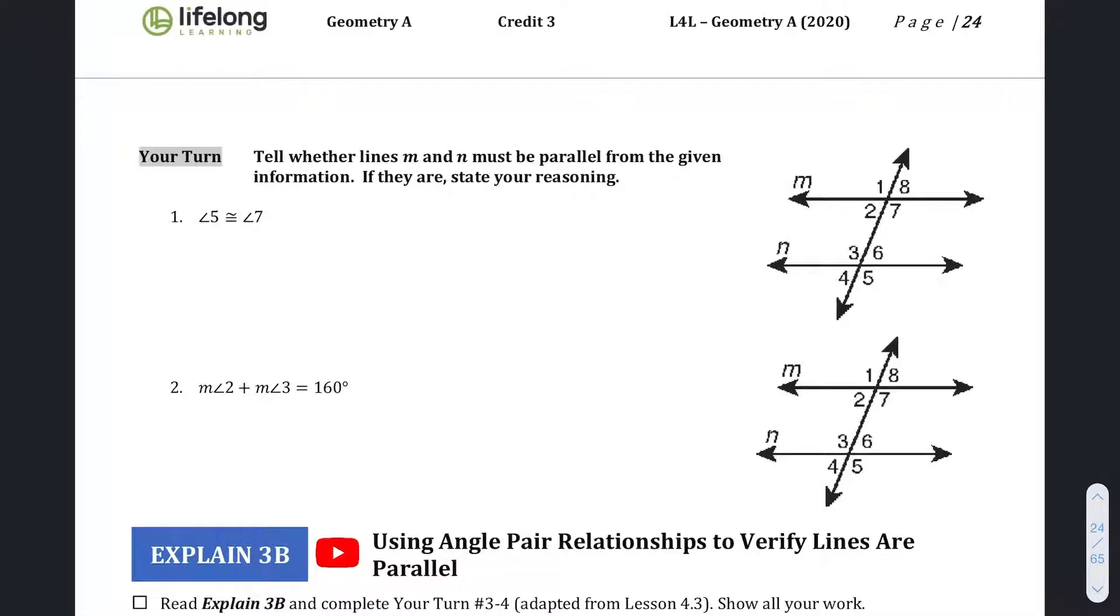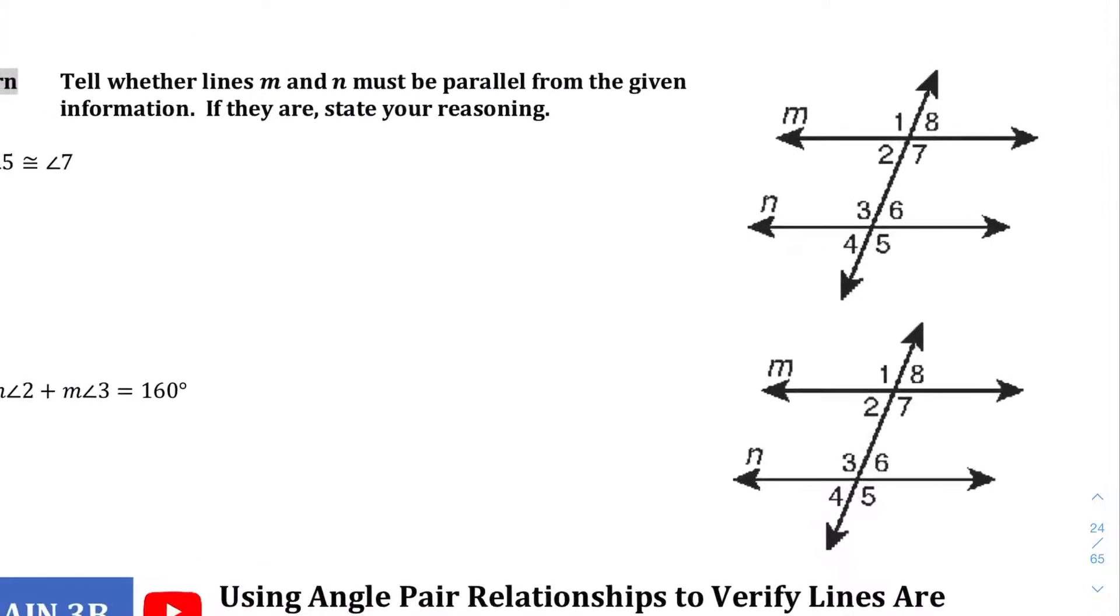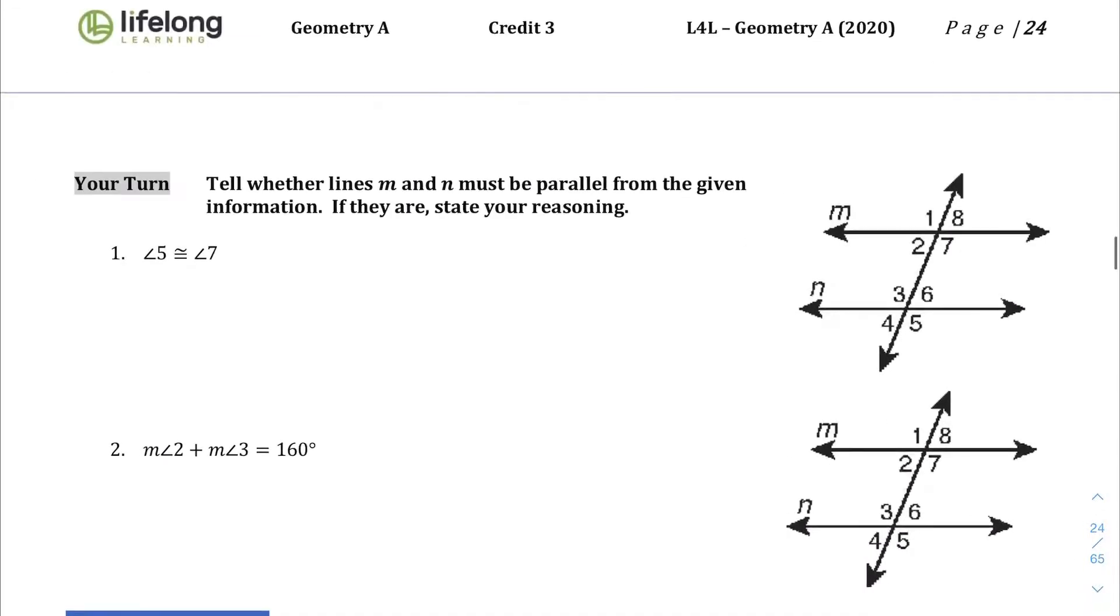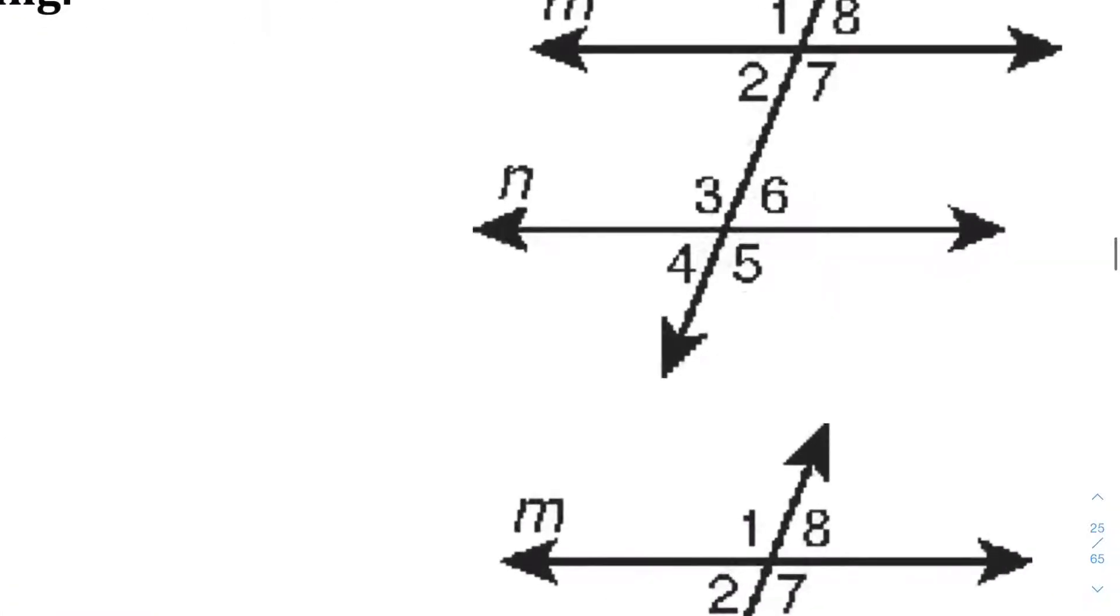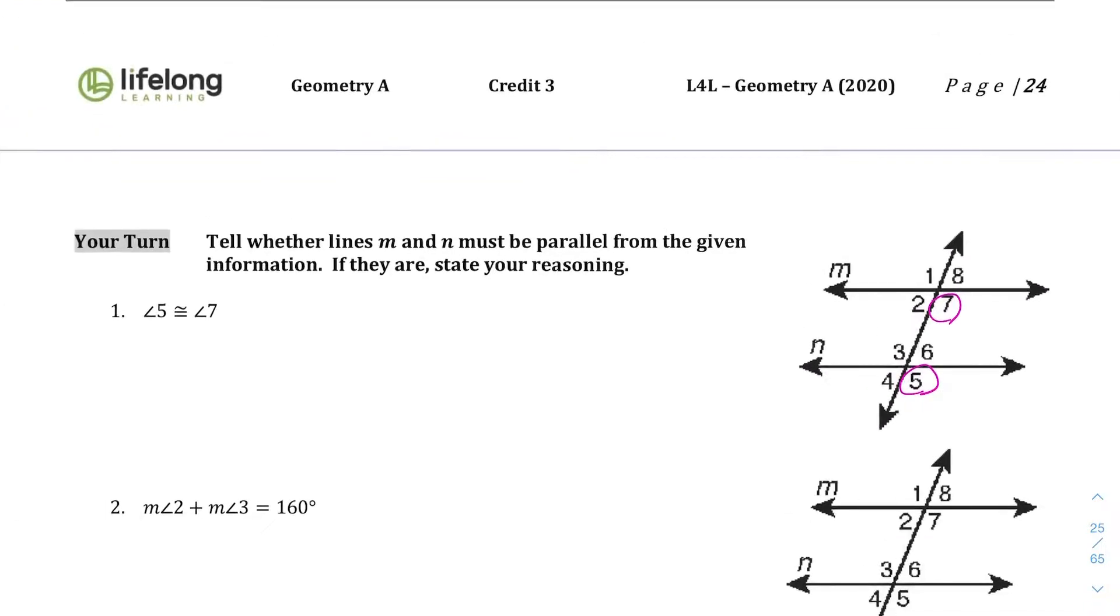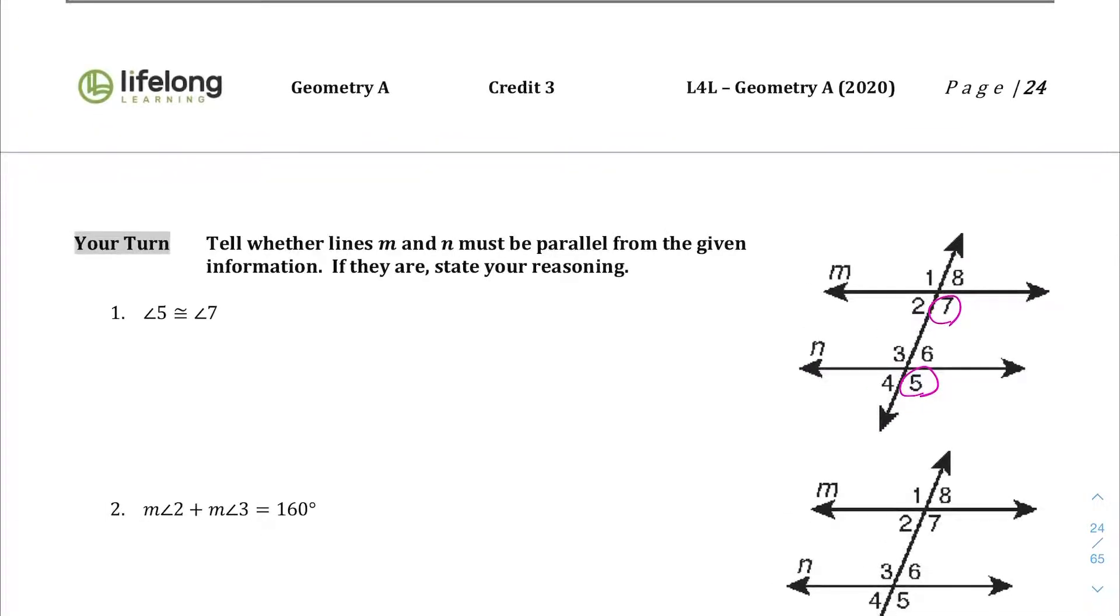So let's take a look at the Your Turn section here for this Explain 3A. And let's see, five and seven. So if five and seven, we are told five and seven are congruent. They are corresponding angles, and they are only congruent when those two lines are parallel. And so they are parallel. They are parallel because of the Corresponding Angles Theorem.